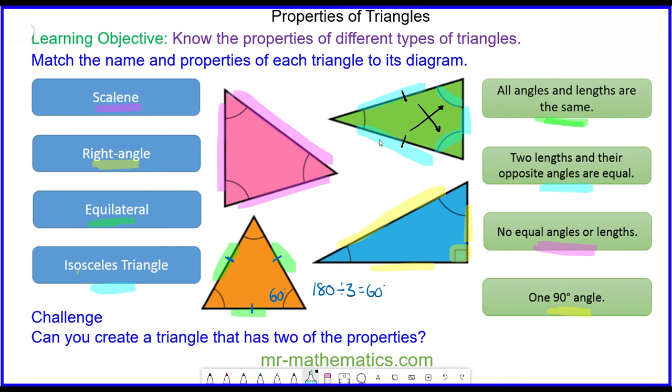Okay as a challenge can you create a triangle that has two of the properties? We've already found this scalene right angle. Can you find another triangle that has two properties?